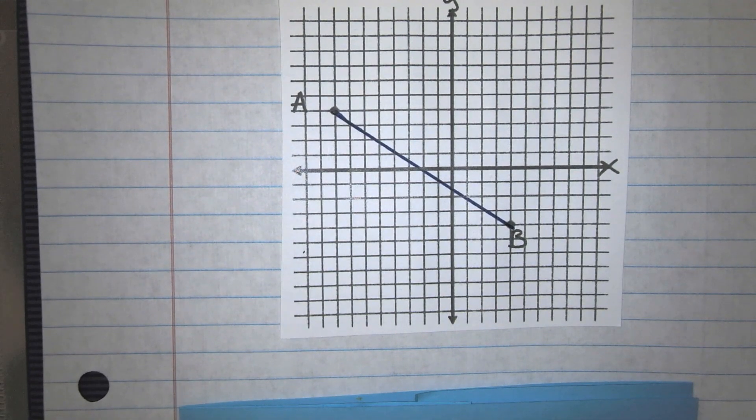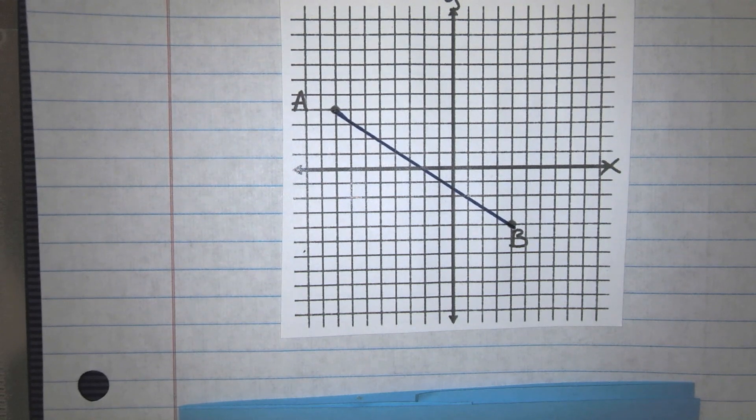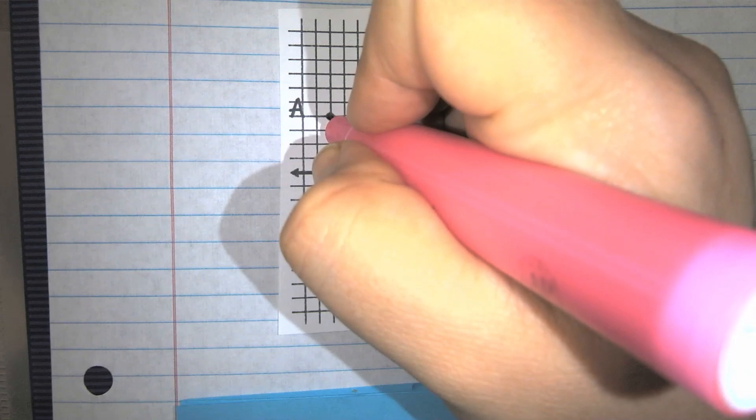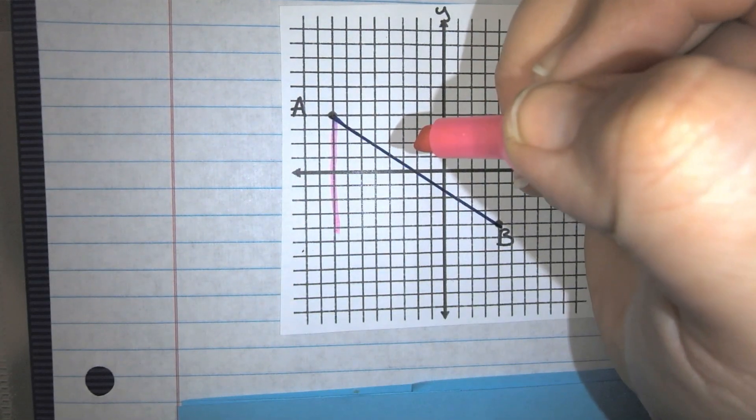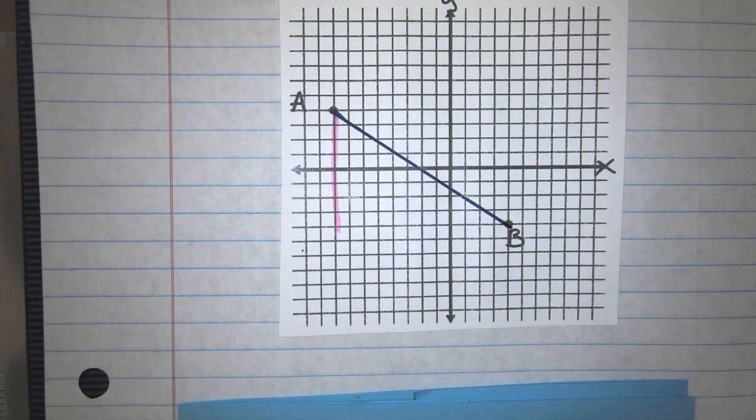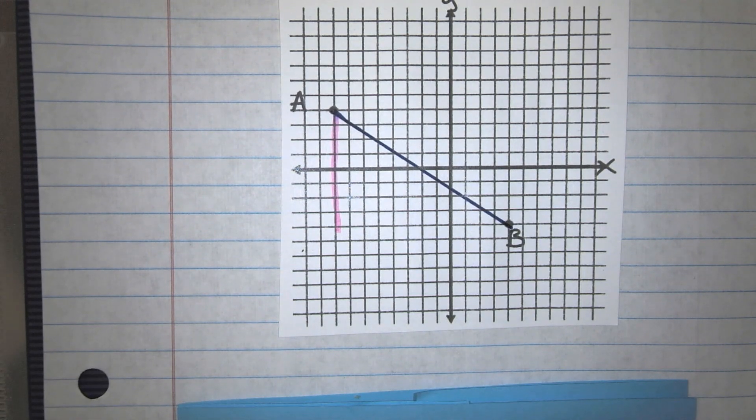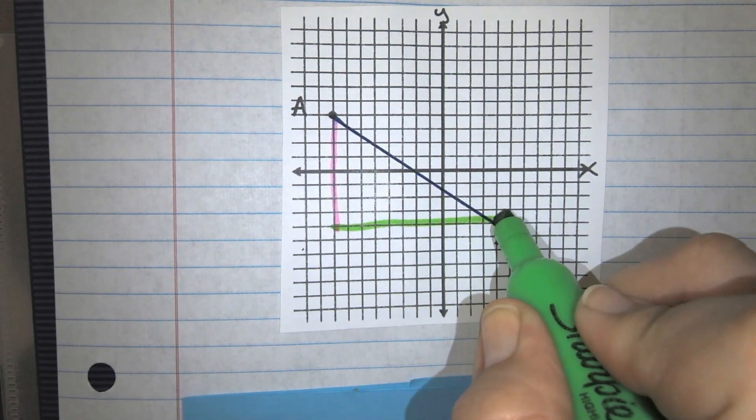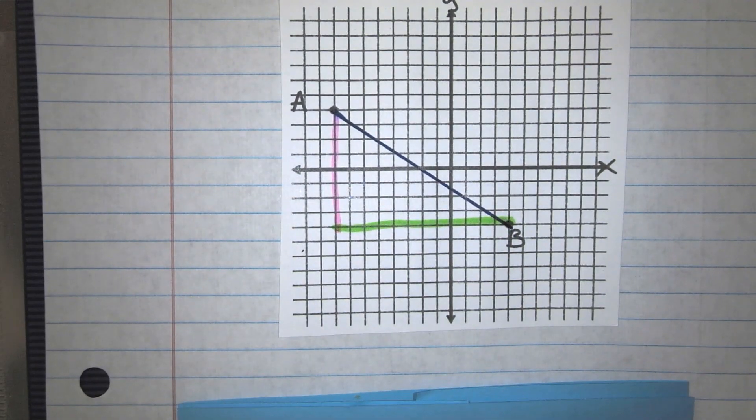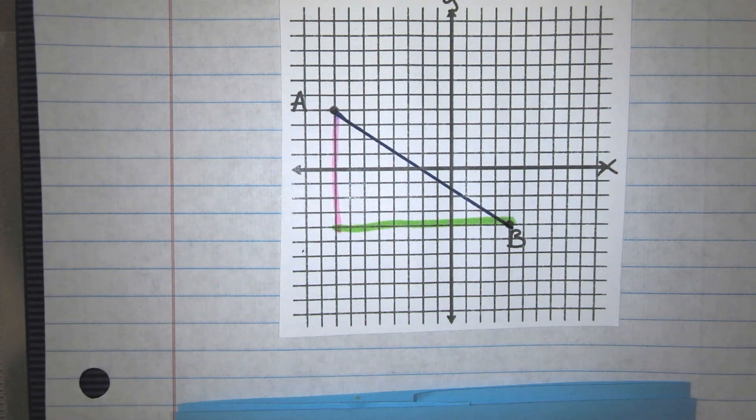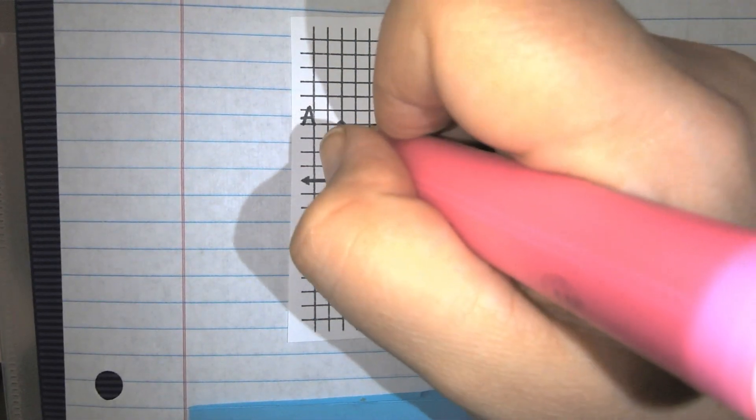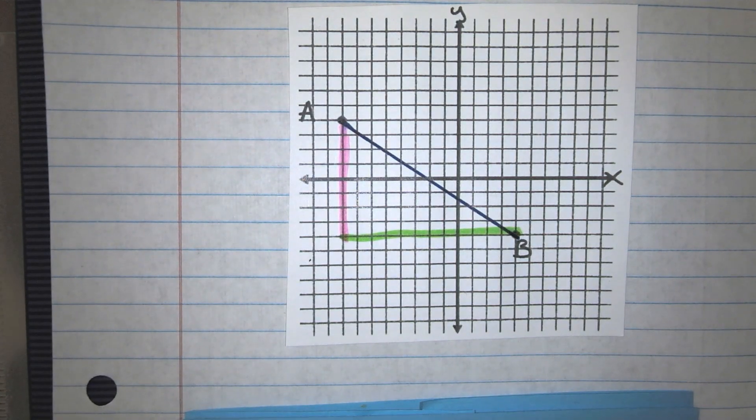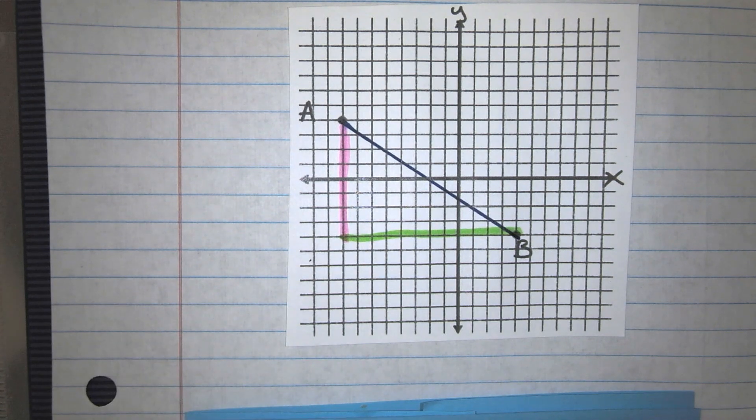But we're going to be looking at both the Pythagorean theorem and the distance formula. So in order to do the Pythagorean theorem, we have to look at this as part of a triangle. So I'm going to actually draw a triangle underneath it like we normally do when we do slope. We're not calculating slope, but it does look very similar to slope. So I'm going to calculate this vertical distance when I drop A down. And then when I go to the right to hit B, how far is that?